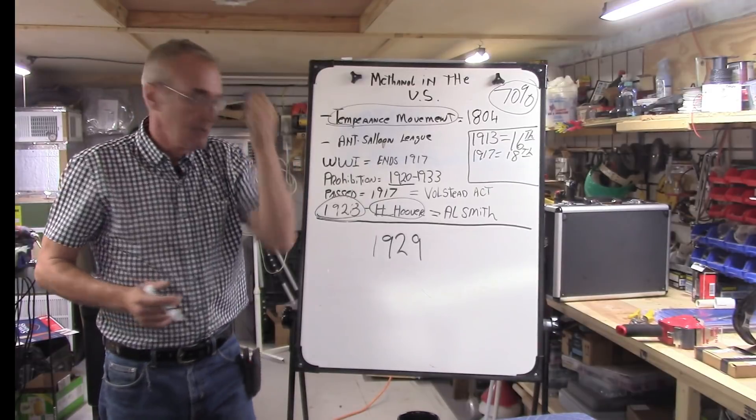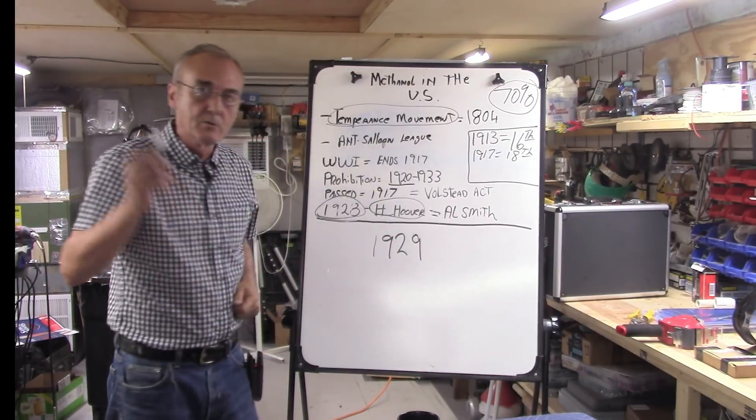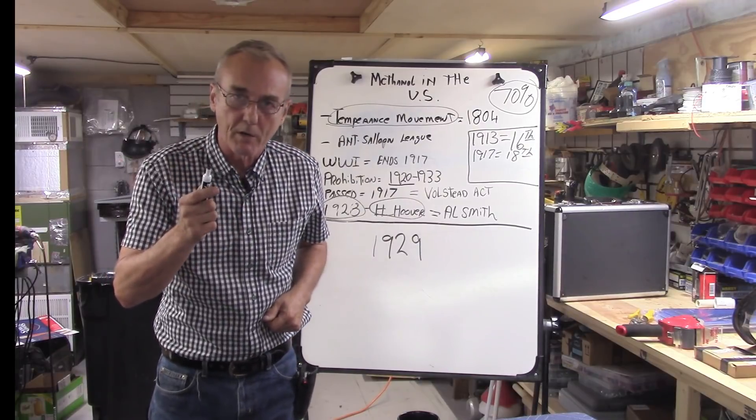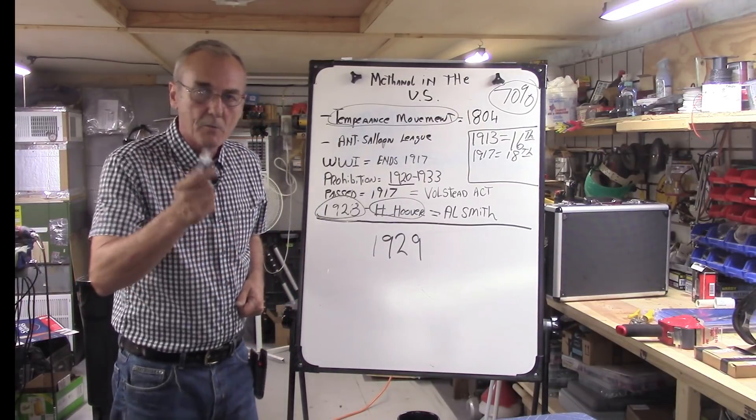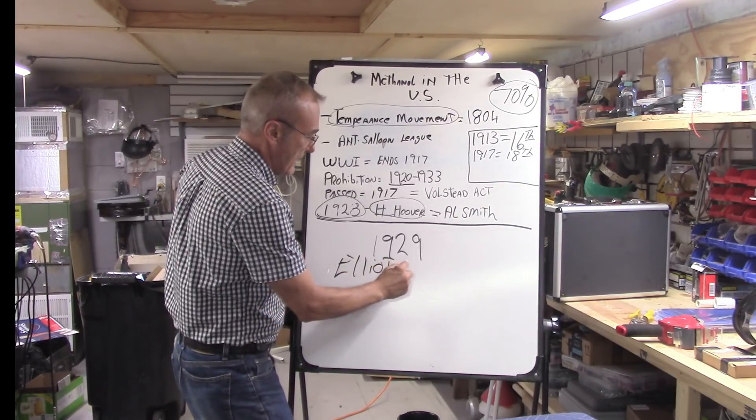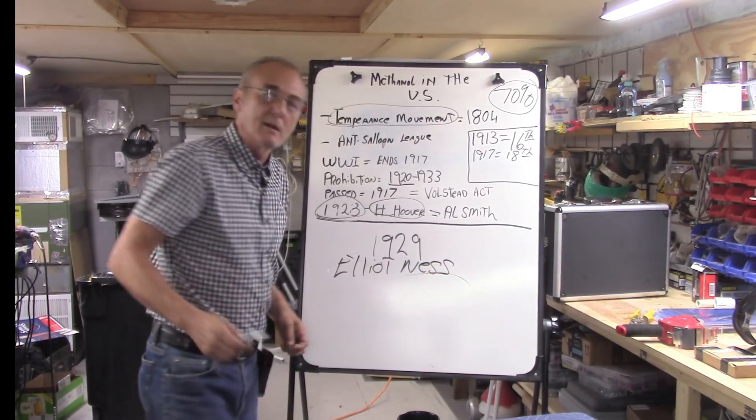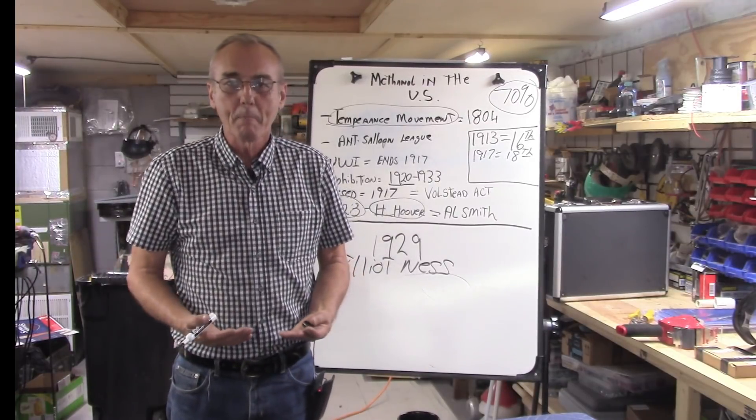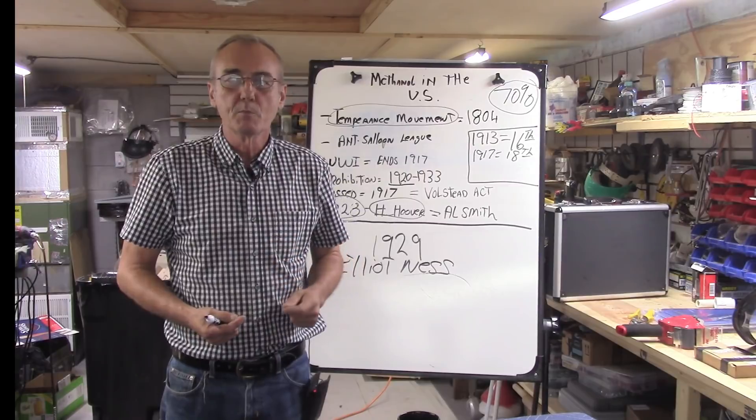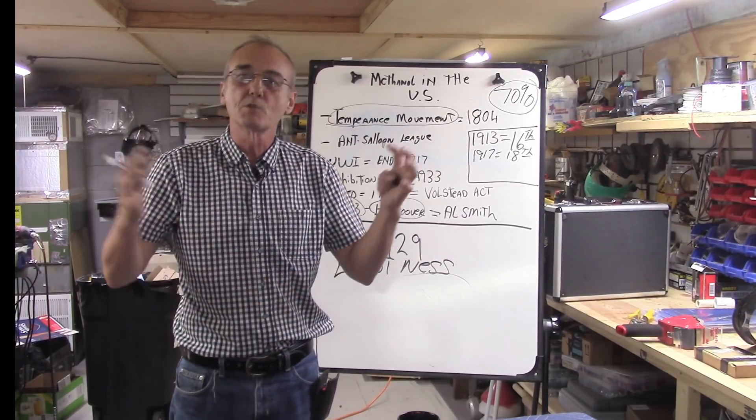A couple of interesting things happened in 1929. We had two events that took place that were really important. One of them you'll know about, it's called the stock market crash, and the other one is Eliot Ness. We're all familiar with Eliot Ness, he's a famous guy.